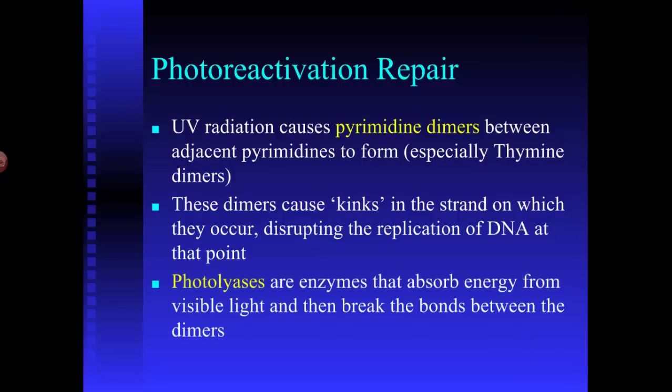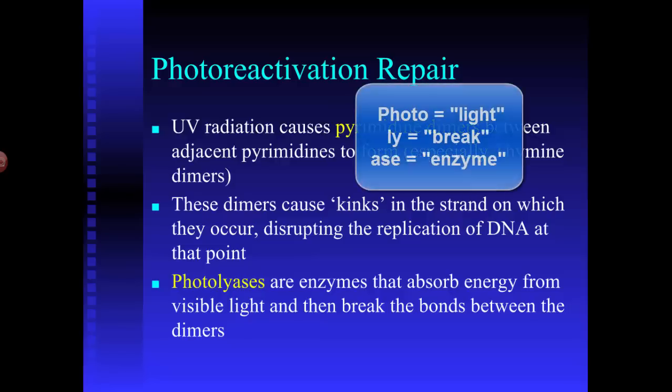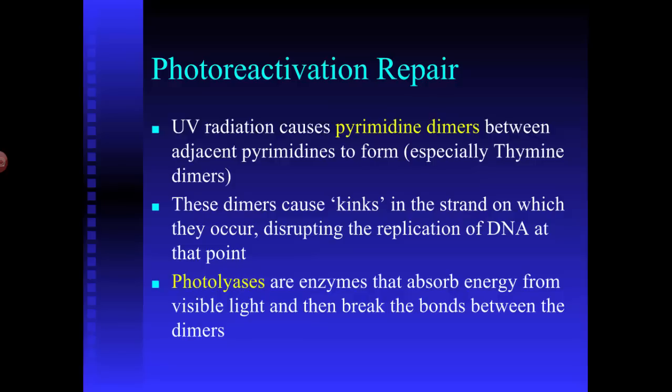Certain organisms — certain types of bacteria and fungi — contain a special type of enzyme called photolyases. The 'photo' means light, the 'lyase' part comes from the word 'lyse,' which means to break, and the '-ase' ending means it's an enzyme. Photolyases absorb energy from visible light and use that energy to break the bonds between the dimers, essentially undoing the damage done by ultraviolet radiation. So photolyase means light-breaking enzyme.